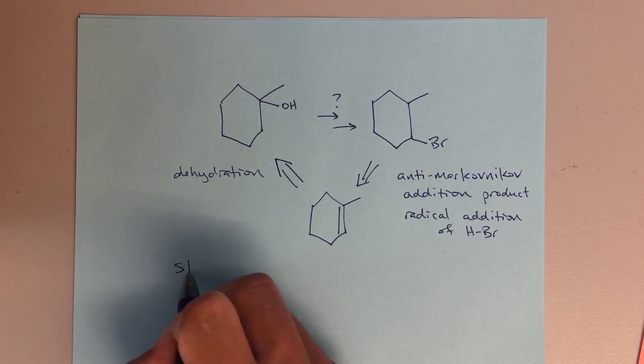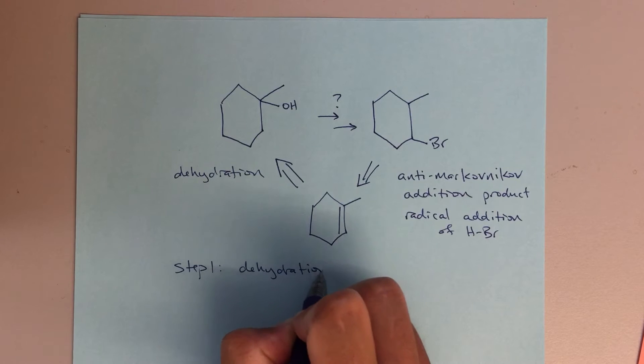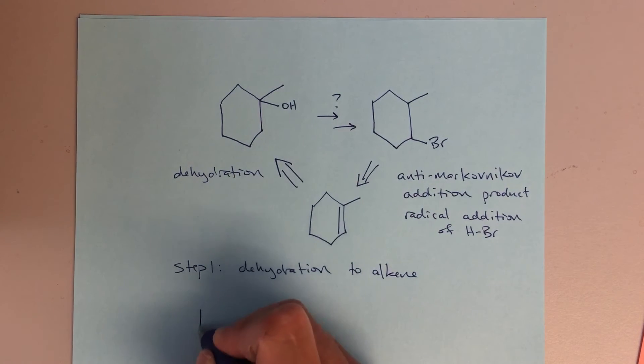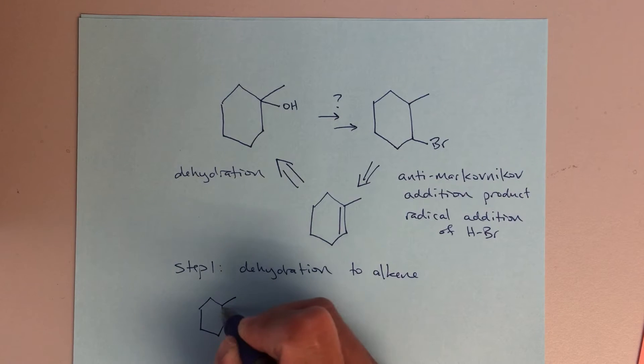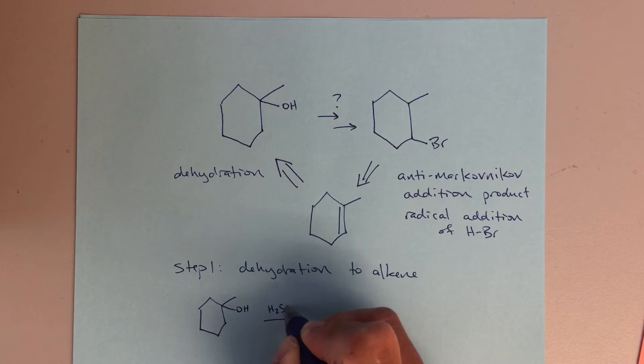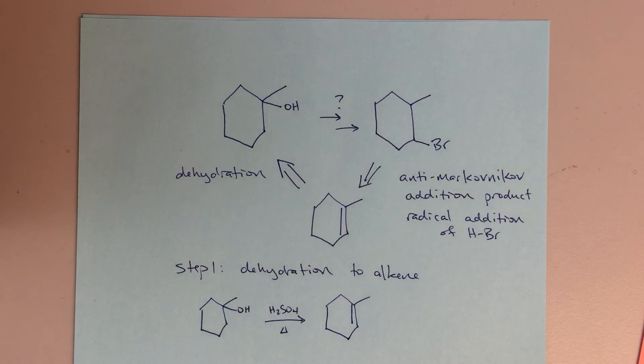So now all that really remains is to write out the different steps. Step one, dehydration to alkene. We're going to do that with sulfuric acid, H2SO4 and a little bit of heat. And that's going to get us to this alkene product.